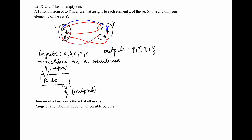Because we can have many such assignments between two sets x and y, we give names to the functions to differentiate between those different assignments. Those names can be of different forms. Traditionally they are single letters like f, g, h, but you can also have longer names like sin, or later on you'll see log, or even a full word like floor, which is used in computer science.